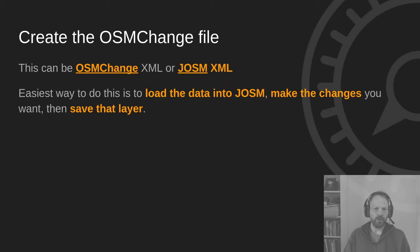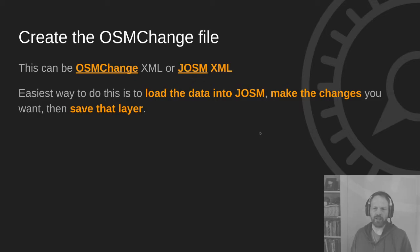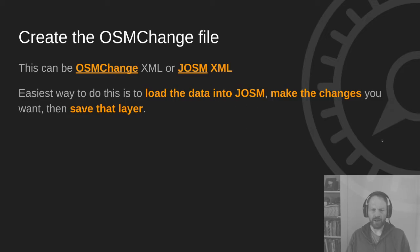First you create the OSM change file. This can be OSM change XML or JOSM XML — both are well-documented XML file formats that describe changes in OSM data, so differences between data A and data B. The easiest way to do that is to load and change the data in JOSM as you would if you were mapping it yourself, either automatically or manually, and then save those changes as a JOSM XML file from JOSM. So you have that XML file ready.